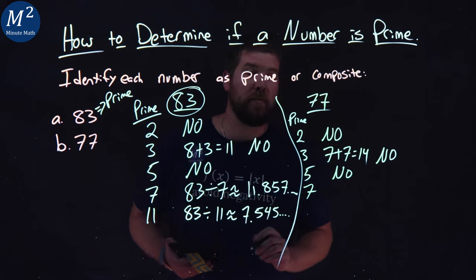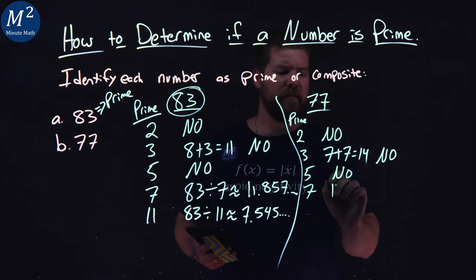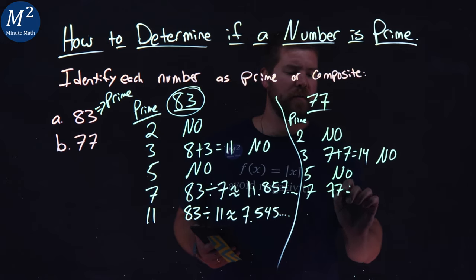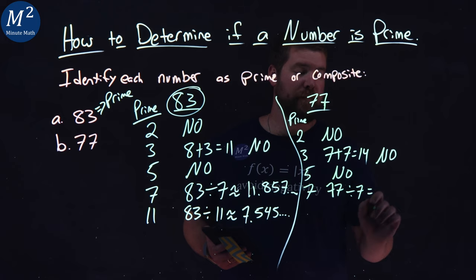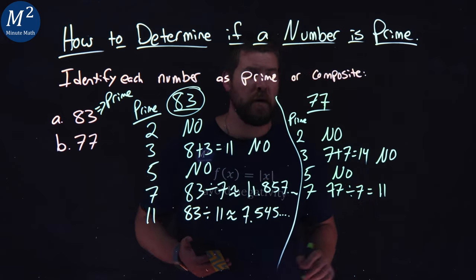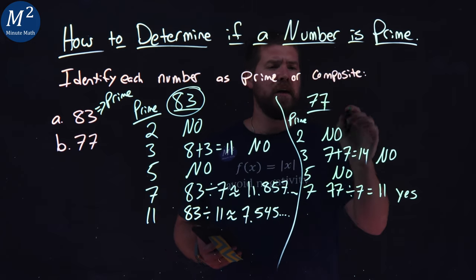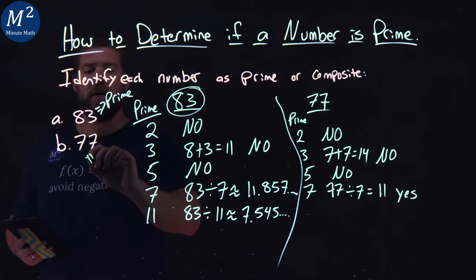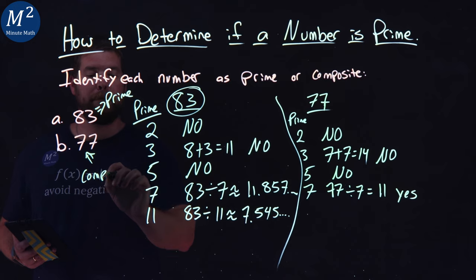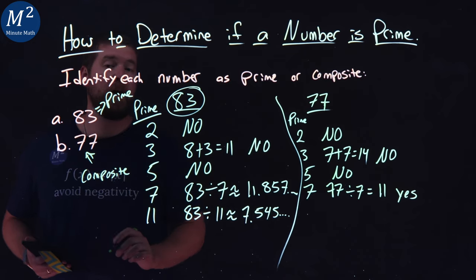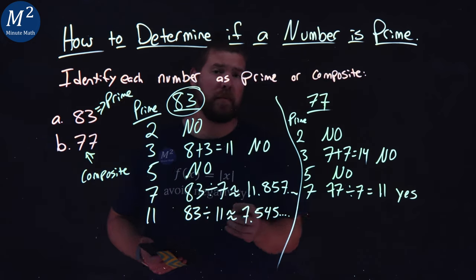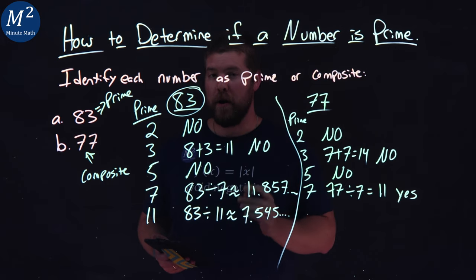Lastly, we have 7 as a prime number. Can you divide 7 into 77? You can. You get 11. So yes, the prime number 7 goes into 77. And so 77 is what we call a composite number. It is not a prime number. Remember, prime numbers are only divisible by itself and 1.